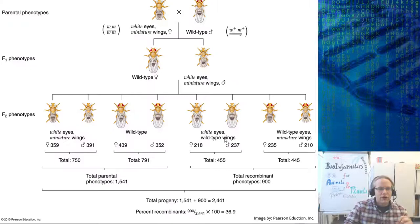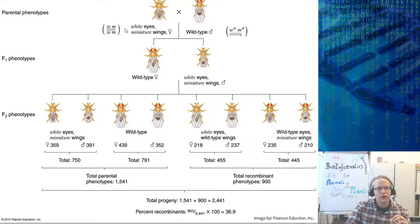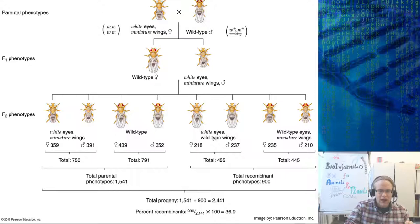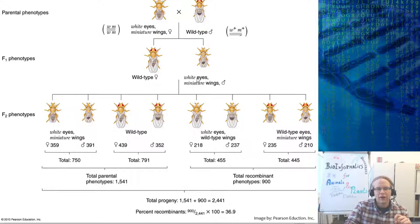This is more or less the crossing scheme that they did using an F2 crossing scheme. You have a white eyes and miniature wings female, and a wild type male — the male of course has a Y chromosome denoted by a little arrow. So white eyes and miniature wings here, and wild type eyes and wild type wings. When you cross these, all the females you get will be wild type and all the males will have white eyes and miniature wings.